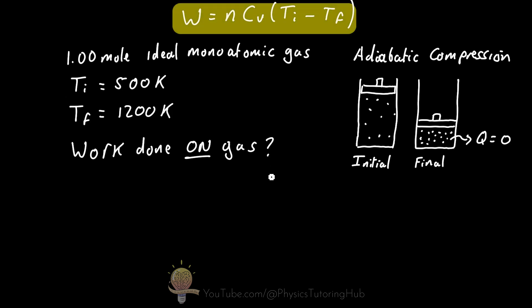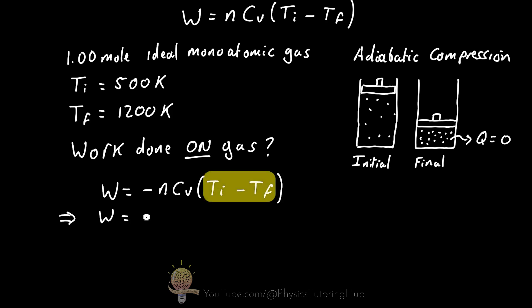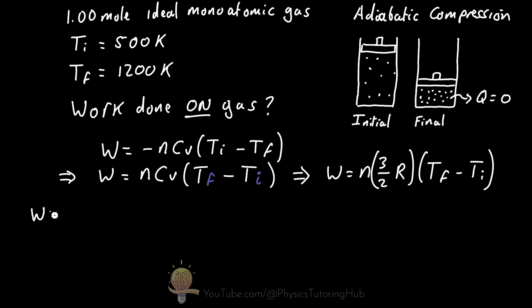Because our equation here calculates the work done by the gas and we want to find the work done on the gas, we simply add a minus sign. What this does is it flips the final and initial temperature variables around, so now we've got the final temperature minus the initial temperature, or simply the change in temperature.